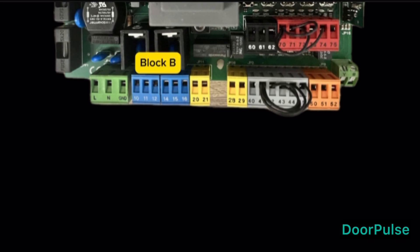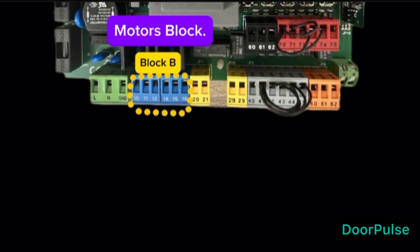Block B, Motor's Block, six pin terminals. Terminals 10, 11, and 12 is Motor 1. Terminal 10, connect Motor 1 phase wire with condenser.